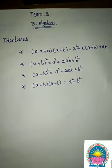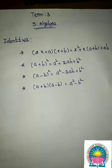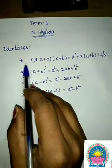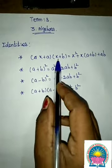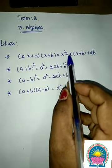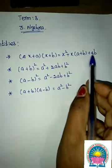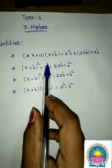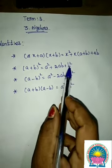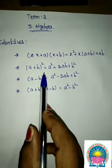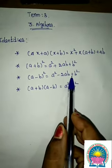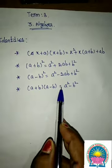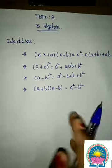In Algebra, there are 4 basic identities. We will do sums based on these 4 identities. Identity 1: (x + a)(x + b) = x² + x(a + b) + ab. Identity 2: (a + b)² = a² + 2ab + b². Identity 3: (a - b)² = a² - 2ab + b². Identity 4: (a + b)(a - b) = a² - b².